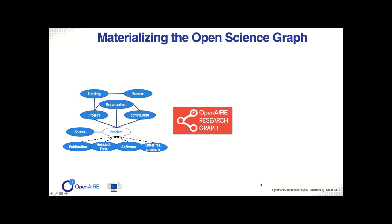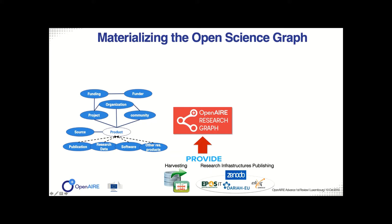Communities are for us a very abstract concept that we use to put together a number of objects which are somehow related in terms of this notion of community. The community can be something very discipline-oriented — for example, European marine science, with all the related publications, data, software, and sources. But it can also be something else, like an initiative of which you would like to measure the research impact — such as EGI, the European Grid Infrastructure, which is a horizontal e-infrastructure.